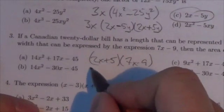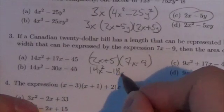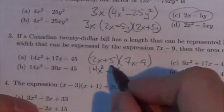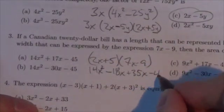So 2x times 7x will be 14x squared, 2x times negative 9 is negative 18x, 5 times 7x will be plus 35x, and then 5 times negative 9 is negative 45.